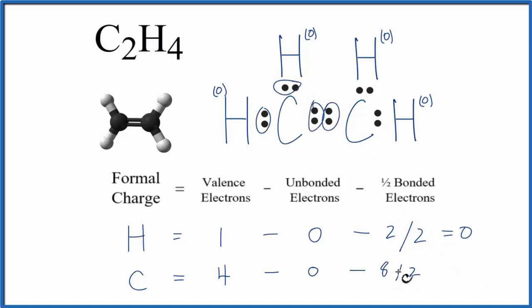So we have 8 over 2. 4 minus 0 minus 4 equals 0. So the formal charge on this carbon is 0.